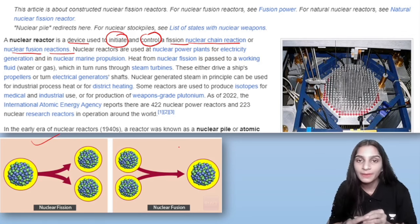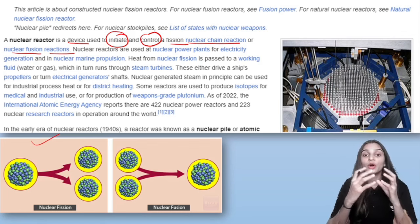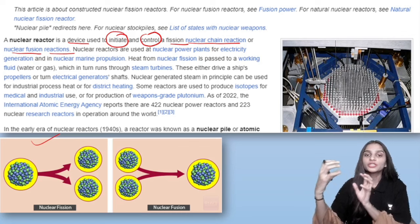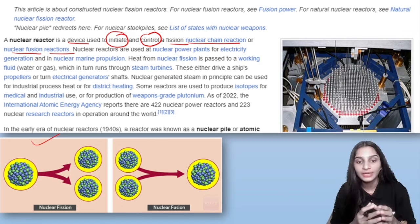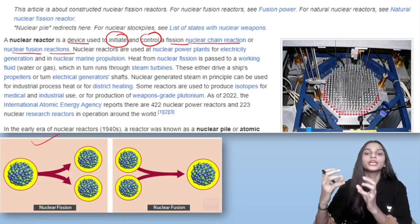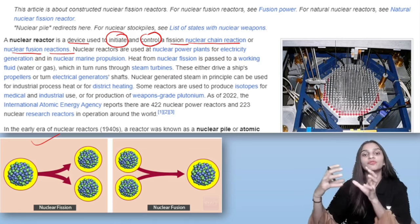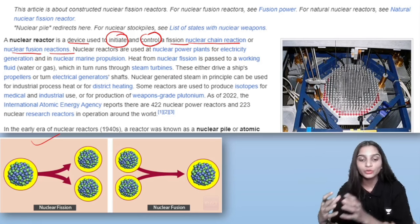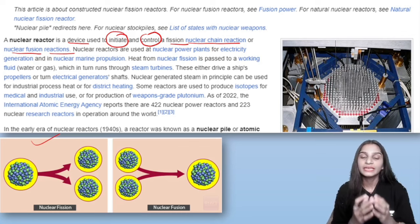When a big atom or molecule is split into smaller atoms or molecules, we call it nuclear fission. On the other hand, when small molecules or atoms are combined together to form a big atom, that process is nuclear fusion.